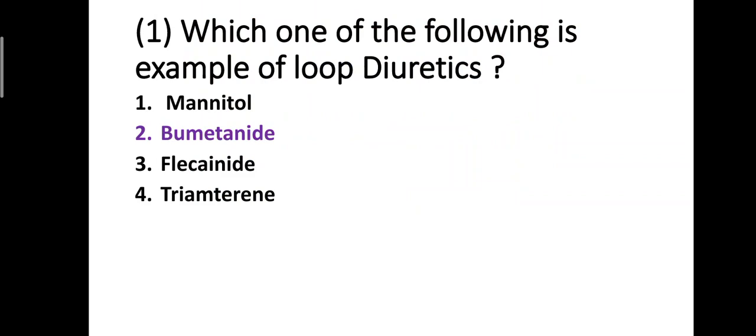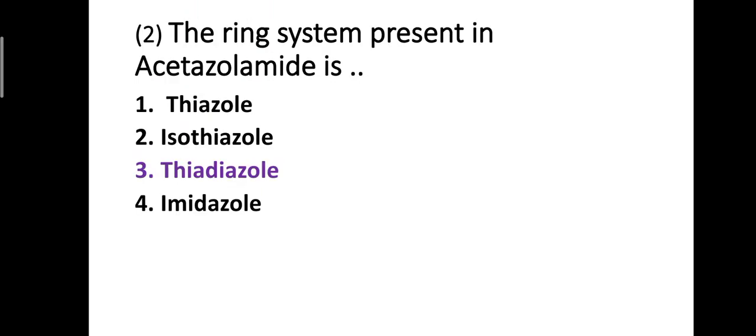Question number one: which one of the following is an example of loop diuretics? Option one: mannitol. Option two: bumetanide. Option three: flecainide. Option four: triamterene. The correct answer is option two — bumetanide is an example of loop diuretics.